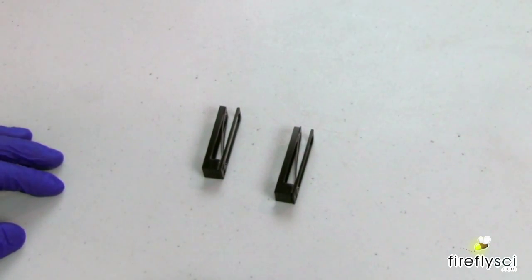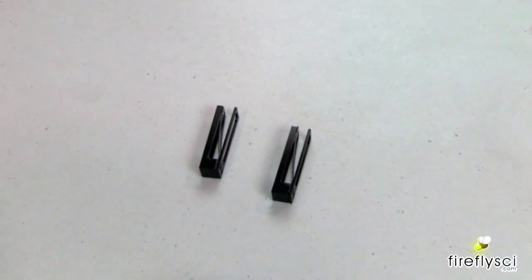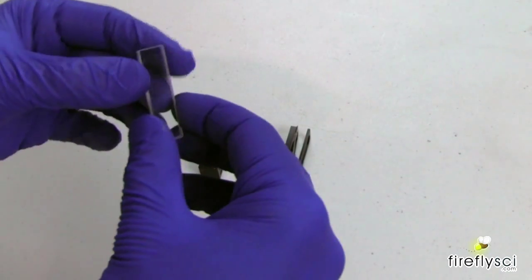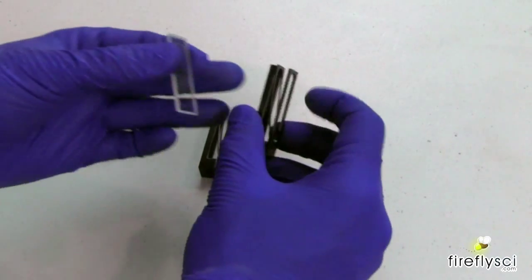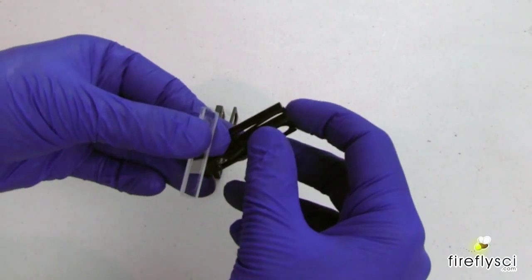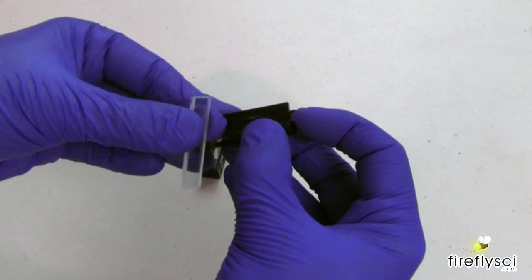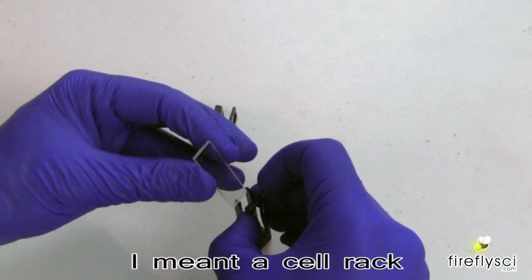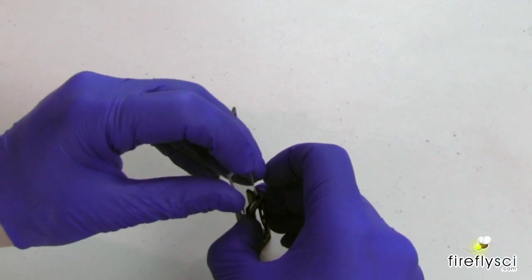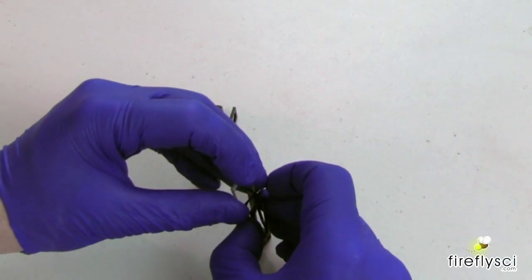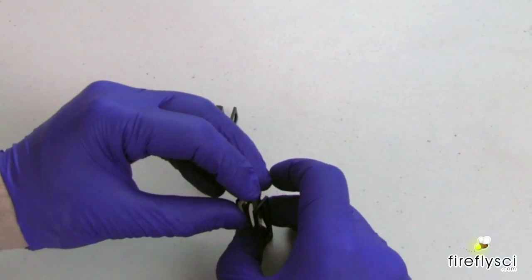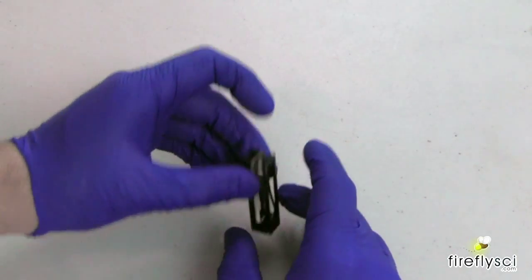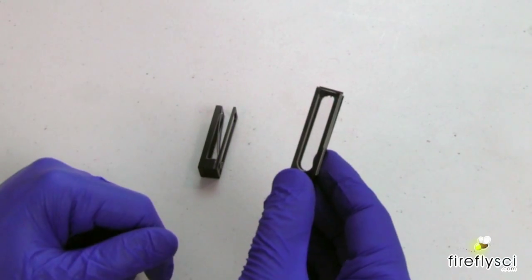So we're going to show you how to load both the Type 49 and the Type 20 cuvettes in these mounts. So let's start with the Type 20. Now I didn't put a sample on this because we're just showing you how it goes in here. So all you have to do is pull the spring back with one hand. It's much easier if you use a cell mount for this. And gently slide it right down into the holder. And it's all set and ready to go.